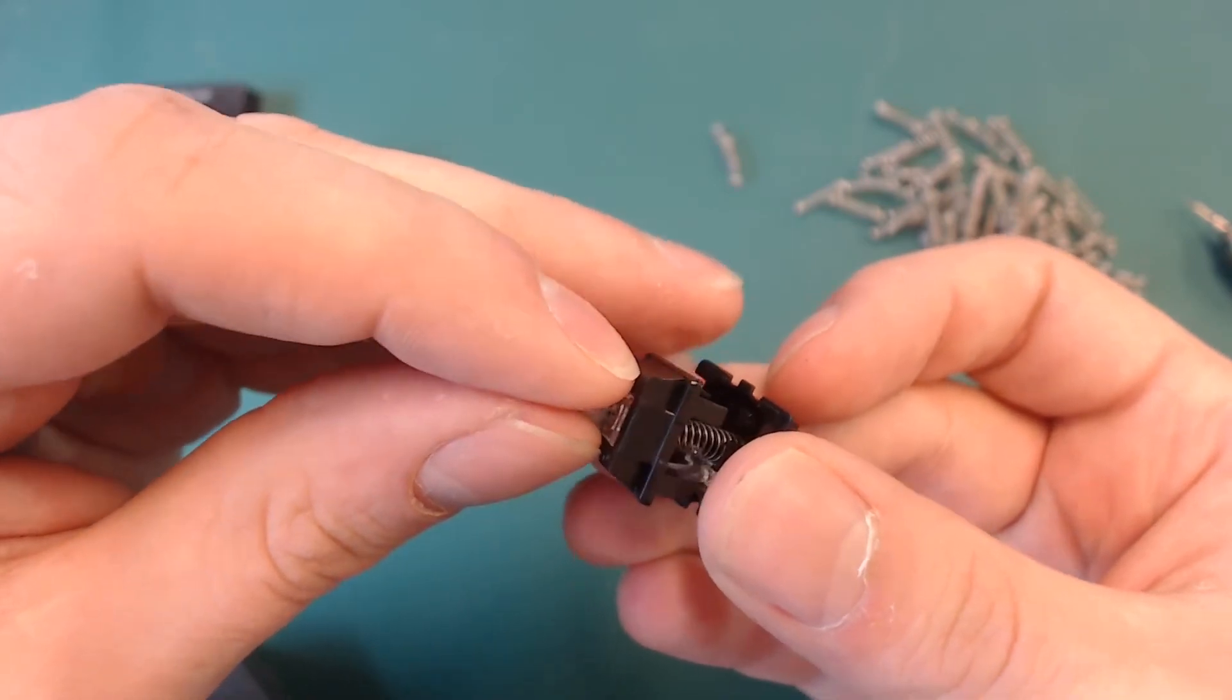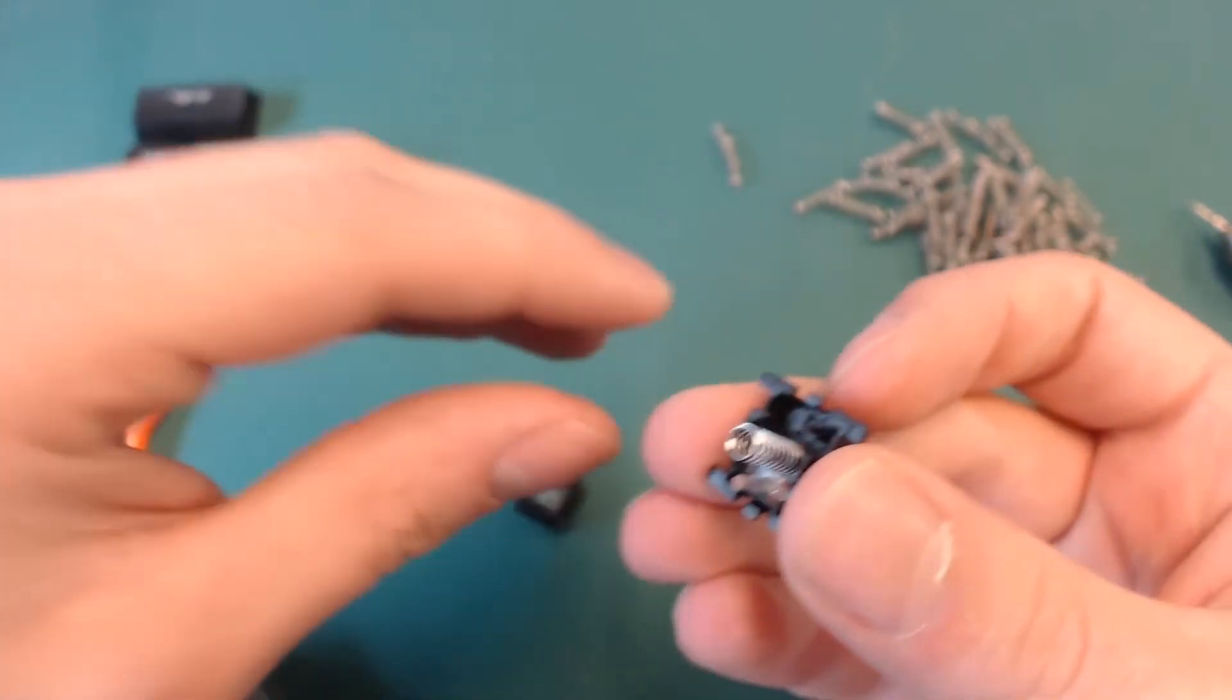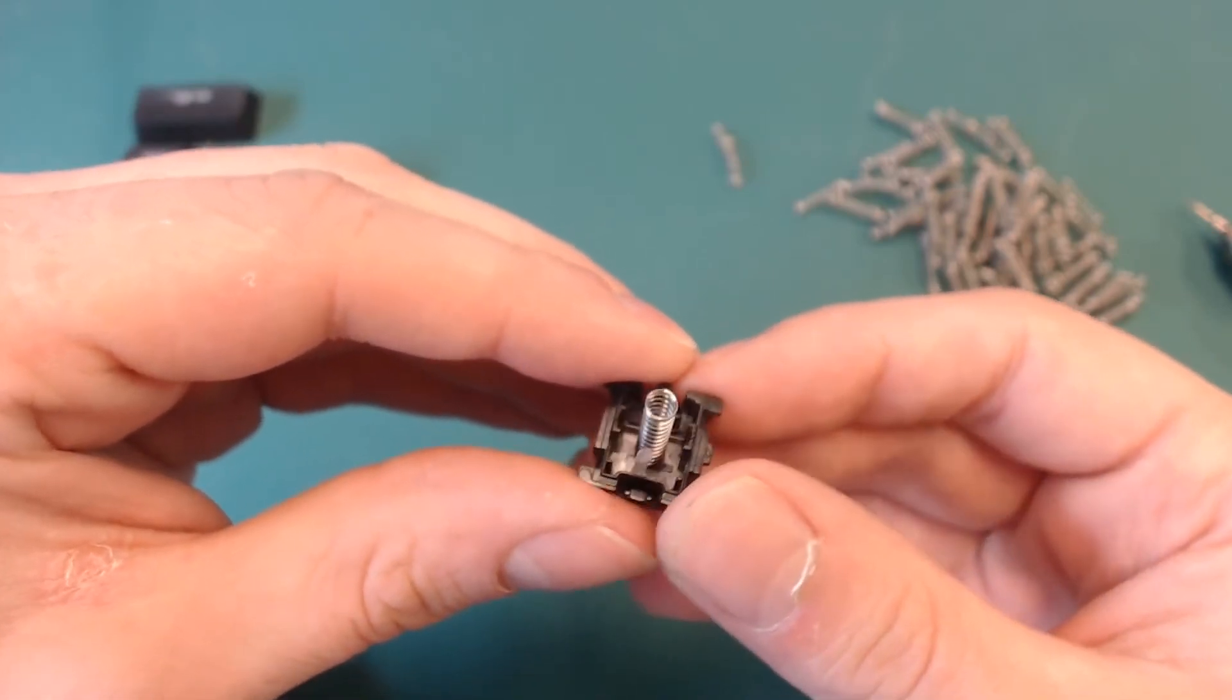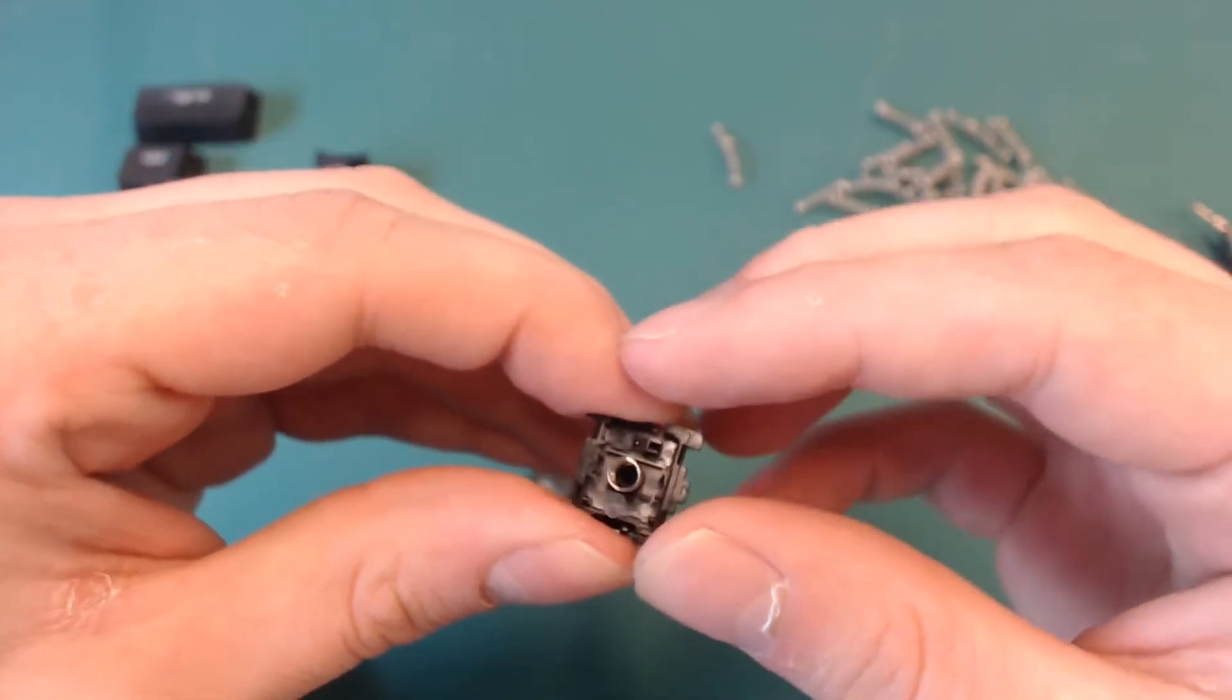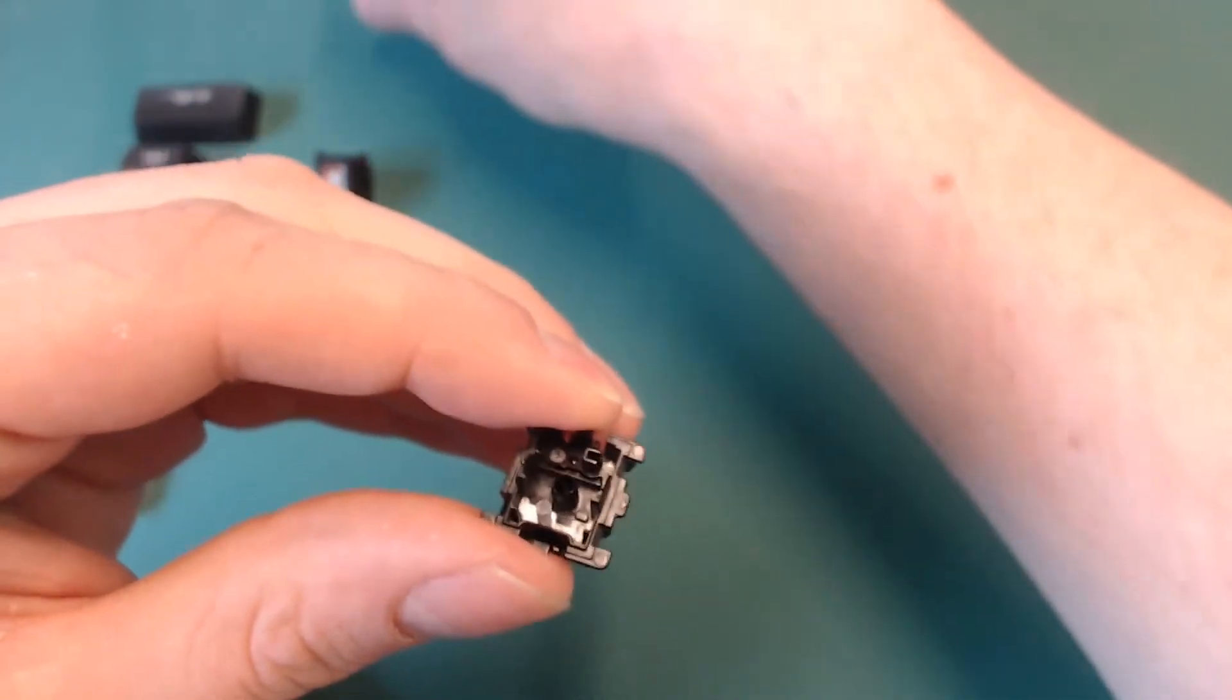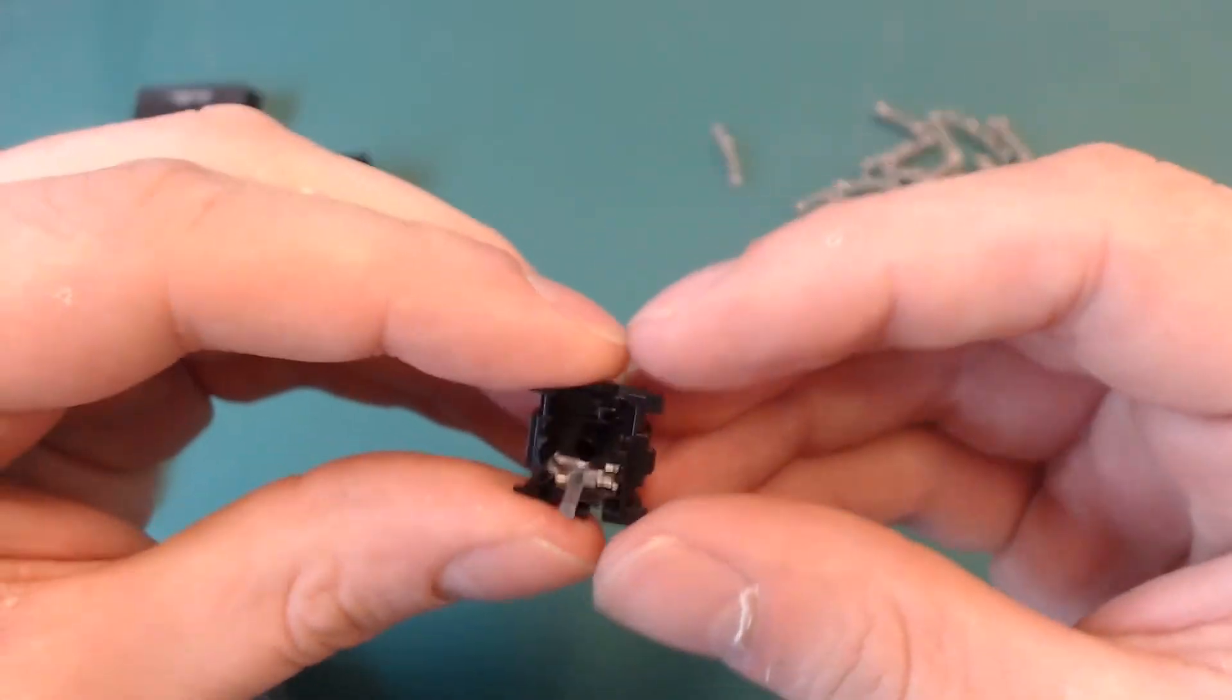Grab the stem and pull it away gently. This is the inside of the switch. If you remove it carefully, everything should stay in place and you can easily remove the spring and put that aside so we don't mess it up later.